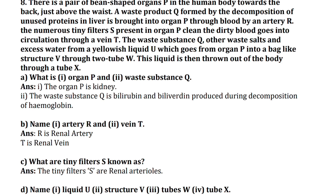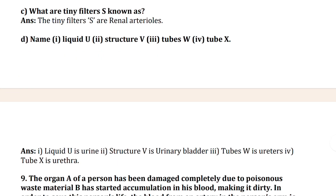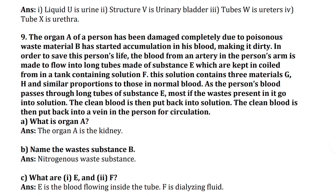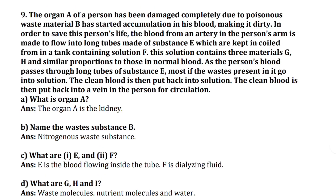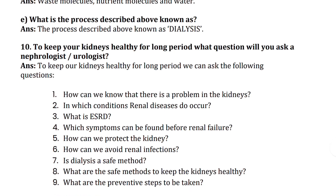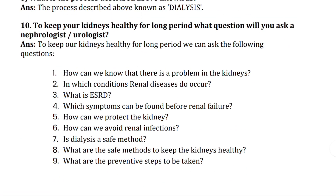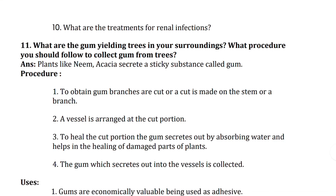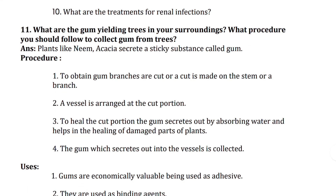The eighth question: there is a pair of bean-shaped organs in the human body located towards the back. You can see the answer here. Then the tenth question is also visible.